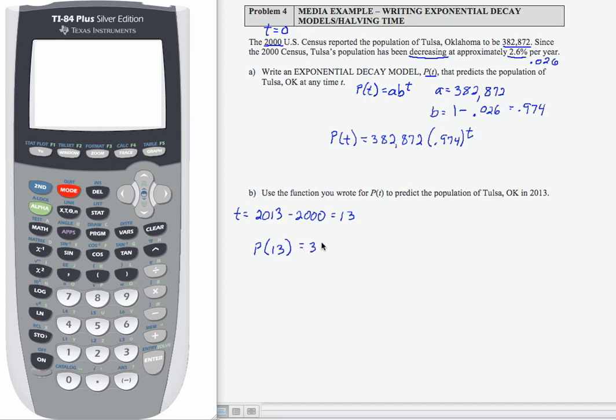Let's go ahead and plug that in: 382,872 times 0.974 to the 13, and let's compute that on the calculator.